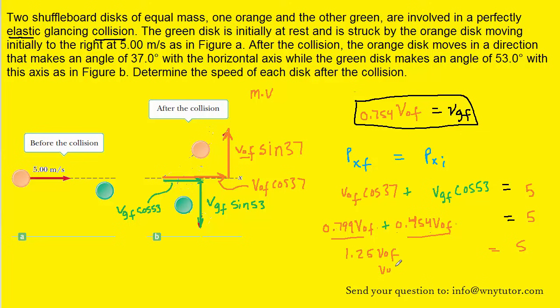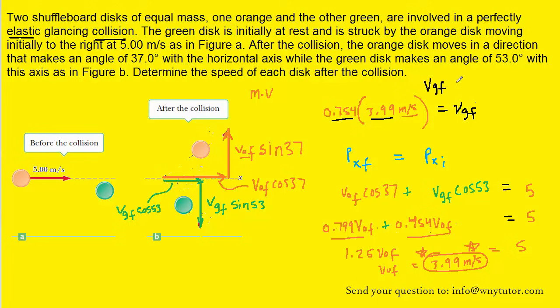And when we do that, we can see that VOF is equal to roughly 3.99 meters per second, so that's going to represent the final velocity of the orange disc. Now since we have VOF, all we have to do is plug that back into our original equation that we boxed in, and that's going to allow us to solve for VGF. And then once we multiply these two numbers in our calculator, we can see that VGF is roughly equal to 3.01 meters per second, so that's going to represent the final velocity of the green disc. So both final velocities have been solved for.